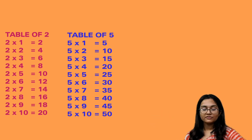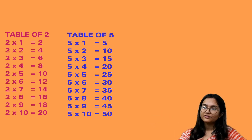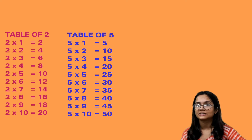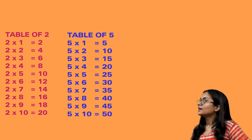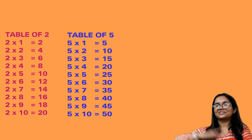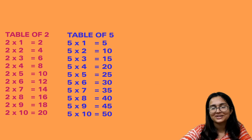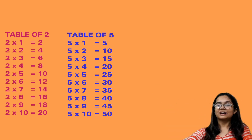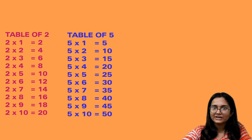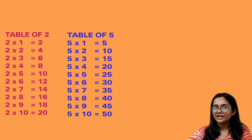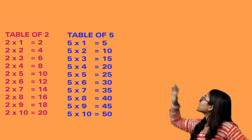The table of 5: 5 1s are 5, 5 2s are 10, 5 3s are 15, 5 4s are 20, 5 5s are 25, 5 6s are 30, 5 7s are 35, 5 8s are 40, 5 9s are 45, and 5 10s are 50.